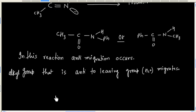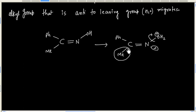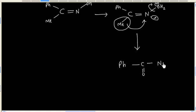For example, in this case, after protonation, we will have this intermediate. Leaving group will depart the molecule and alkyl group will migrate. So finally, we will have this product.